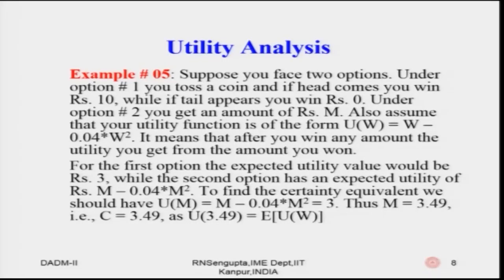The first option is the gamble, the second is the certainty value M, and we are given the utility function U(W) = W − 0.04·W². For the certainty value, the utility of M is U(M) = M − 0.04·M², multiplied by probability 1 — giving expected utility equal to M − 0.04·M² (Equation 1).